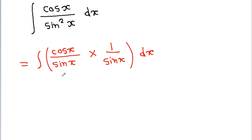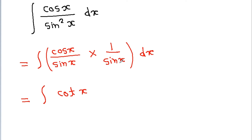Now we can write it as integration of cot x into cosec x dx, since cos x by sin x is cot x and 1 by sin x is cosec x.